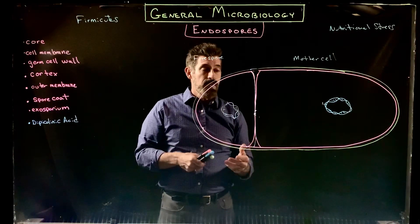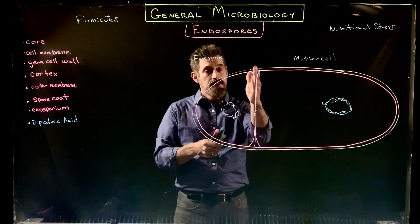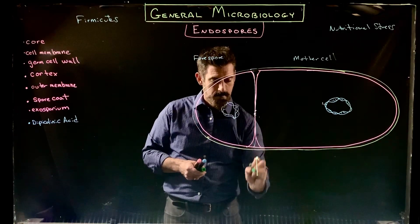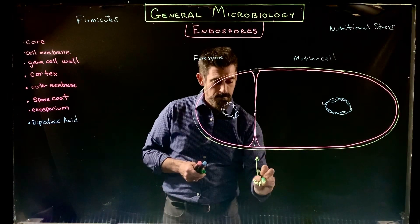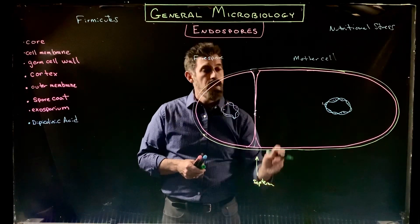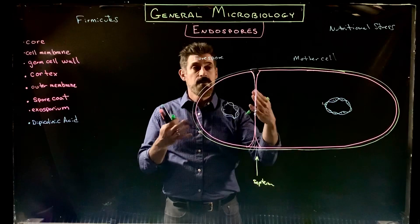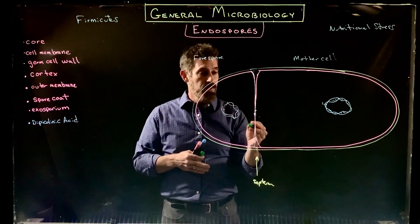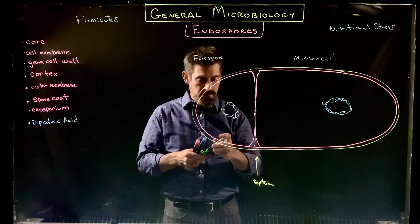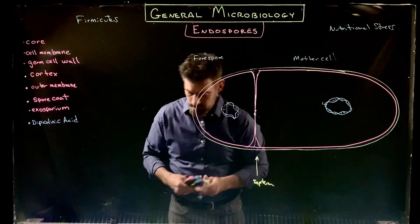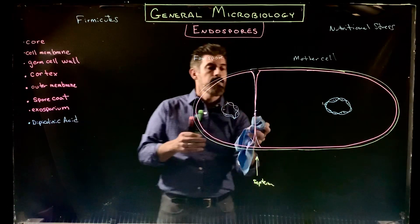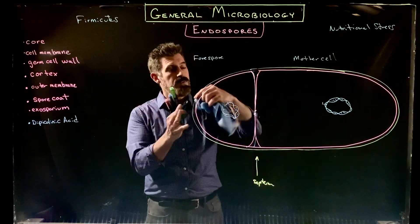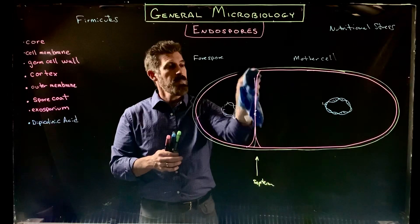After that process occurs, there's going to be some breakdown in the septum. The mother cell is going to engulf the entire forespore — this part here is going to essentially consume the other part.